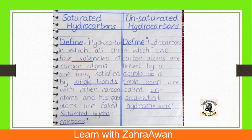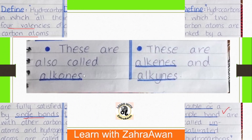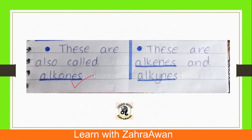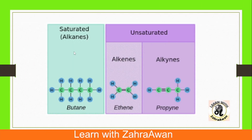Saturated hydrocarbons are made of single bonds between carbon atoms. Unsaturated hydrocarbons are made of double or triple bonds. Alkanes are saturated hydrocarbons with single bonds. Alkenes and alkynes are unsaturated hydrocarbons with double or triple bonds. In the diagram, alkanes have carbon-carbon single bonds, making them saturated hydrocarbons, while alkenes and alkynes are unsaturated.